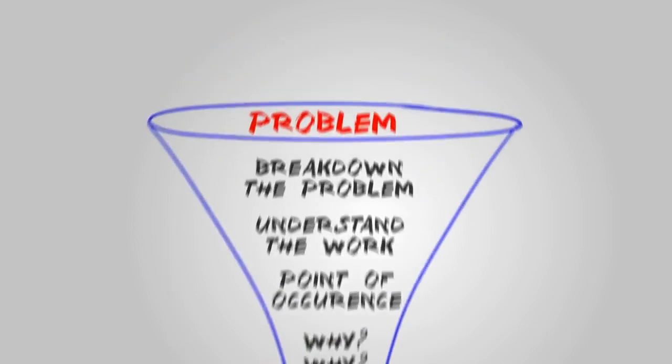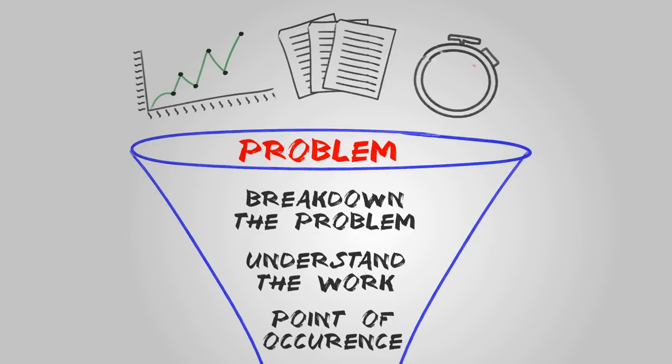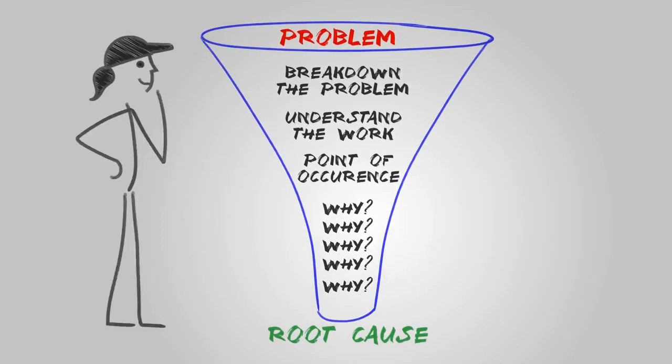What we want to do is break the problem down to understand it, get some data, get some facts, look for patterns. From there, that means understanding the work. This is certainly a characteristic of lean problem-solving, which is to deeply go and observe and understand the work.